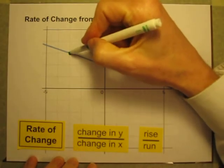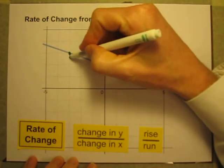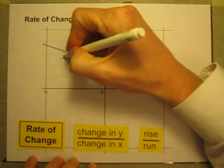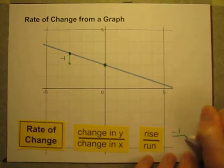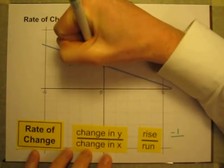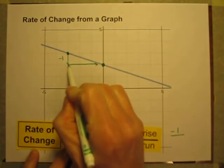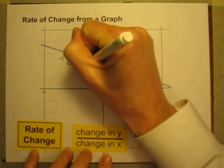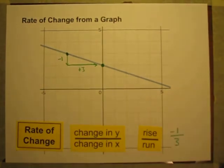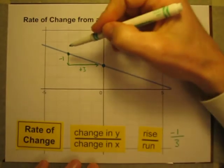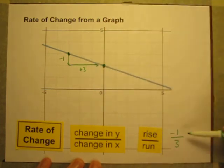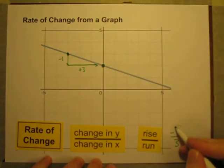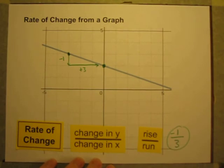As I go from this point to this point, I have to go down one. Down is negative, so my rise is negative one. My run is to the right — one, two, three — so that's positive three. The rate of change of this line, with no miles per hour or anything, just y's and x's: I lose one y for every three x's, or negative one y for every positive three x's. That gives me negative one-third as my slope.